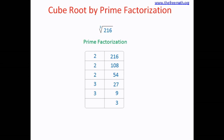Here are the prime factors. 216 divided by 2 you get 108, divided by 2 you get 54, divided by 2 you get 27. 27 is not divisible by 2, so divided by 3 you get 9. Again divided by 3 you get 3. 3 is a prime number, so we stop.